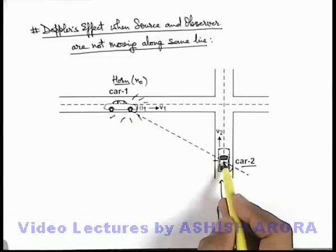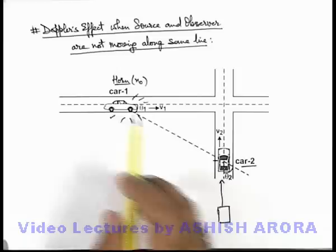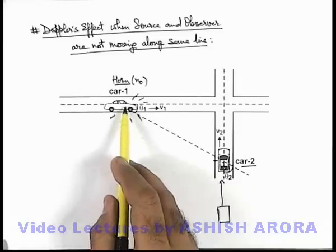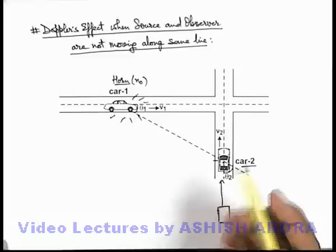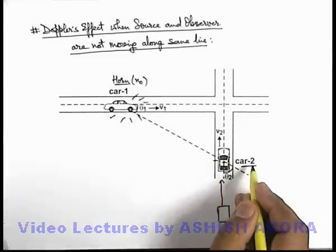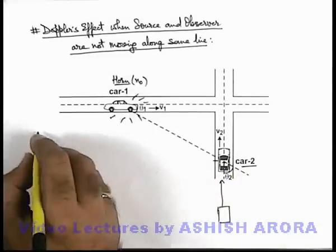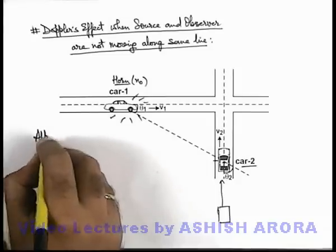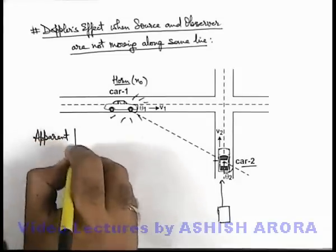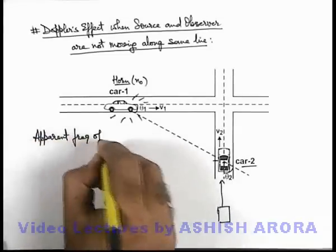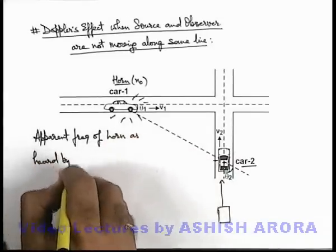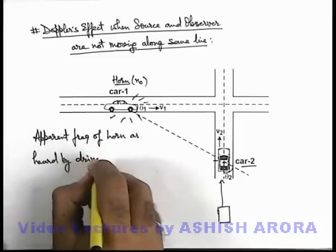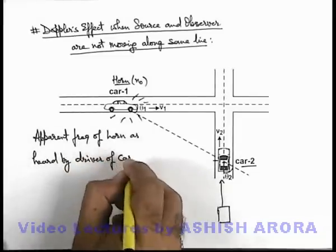Obviously when car 2 is hearing — when the driver of car 2 is hearing the sound — car 1 will not be located at this position; it'll be somewhere at a forward location. Now say we wish to find out the apparent frequency heard by the driver of car 2. We can easily calculate the apparent frequency of the horn as heard by the driver of car 2.